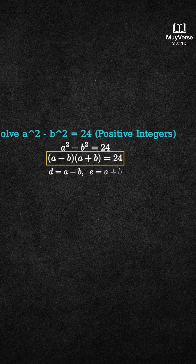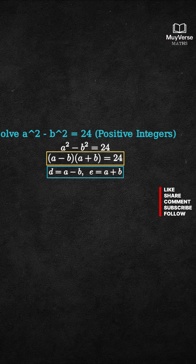Let the smaller factor be d equals a minus b, and the larger factor be e equals a plus b. Step 2: list all positive factor pairs of 24 for d times e. We show them all in a grid.